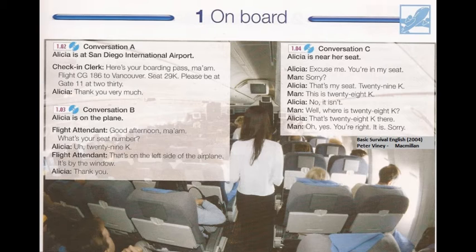Here's your boarding pass, ma'am. Flight CG-186 to Vancouver, seat 29K. Please be at gate 11 at 2:30.